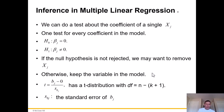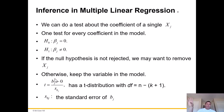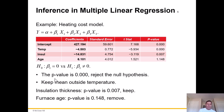We can do a test about the coefficient of a single x sub j — one test for every coefficient in the model. The null hypothesis says the coefficient equals zero, meaning no change. The research hypothesis says there is a change, hence the inequality. This is two-tailed. If the null hypothesis is not rejected, we may want to remove x sub j. If the independent variables aren't significant on an individual basis, maybe we make a case to take them out because they don't appear to add anything to the model.